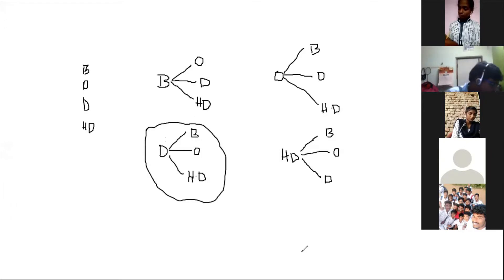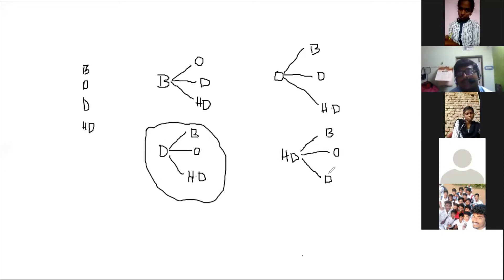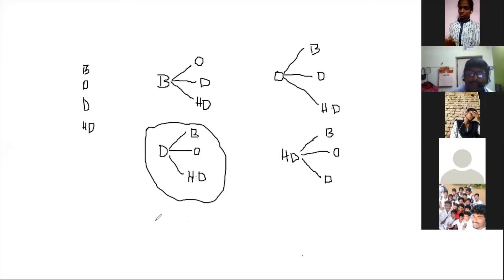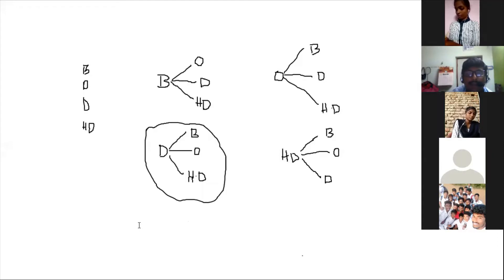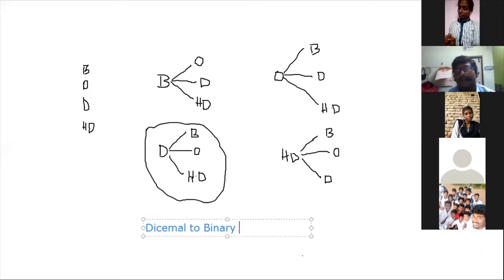Alright, let's write the heading: Number Conversions. I will draw the four number systems — binary, octal, decimal, and hexadecimal — and then I will start with the first: decimal to binary number conversion.